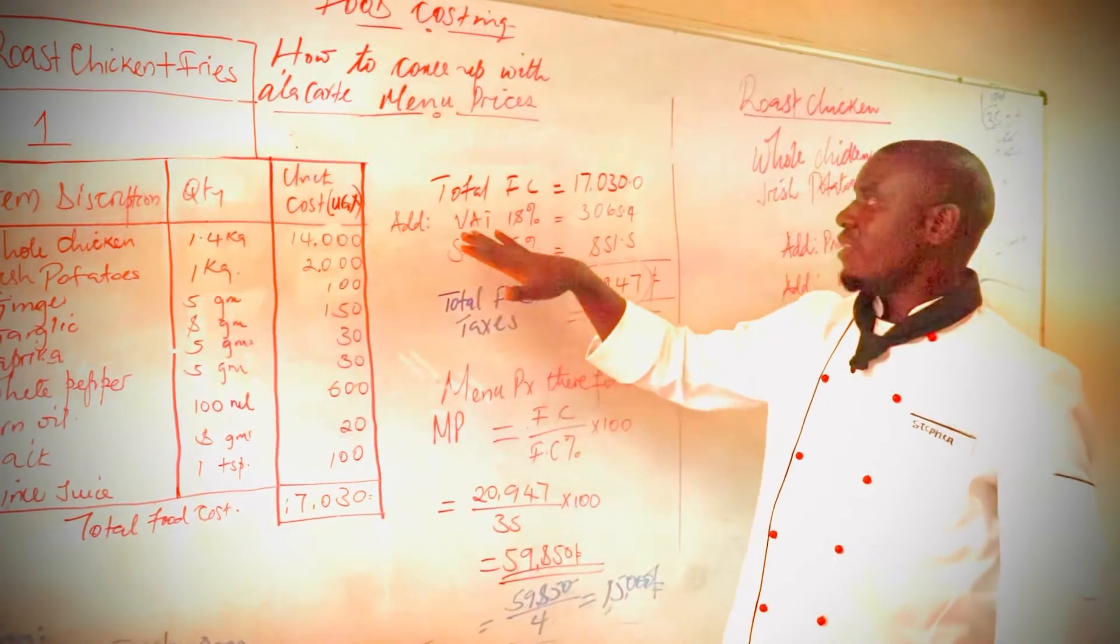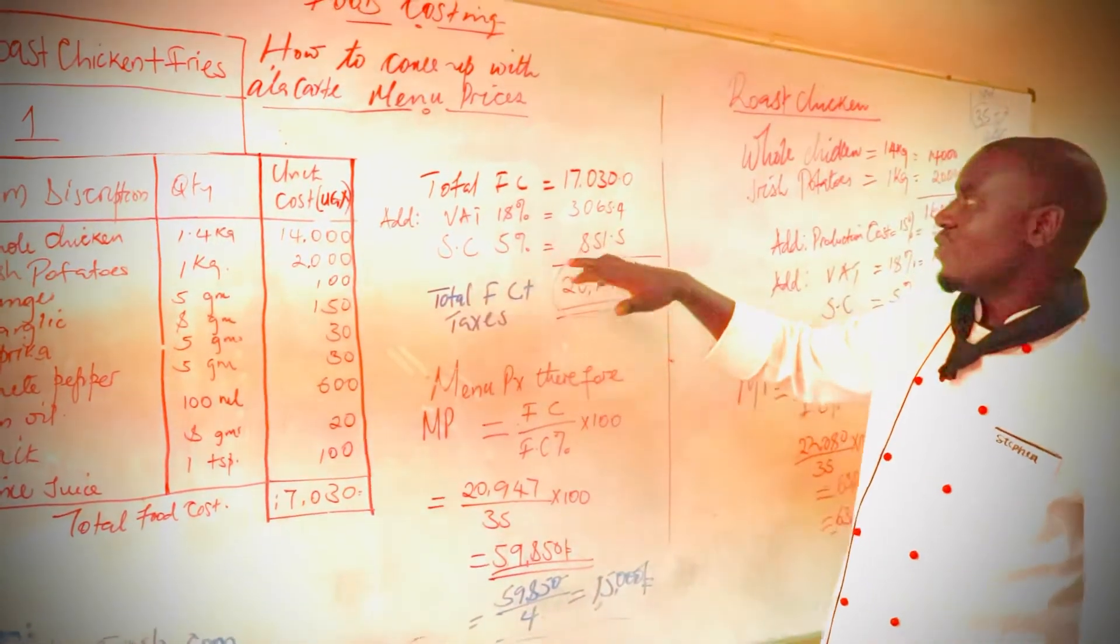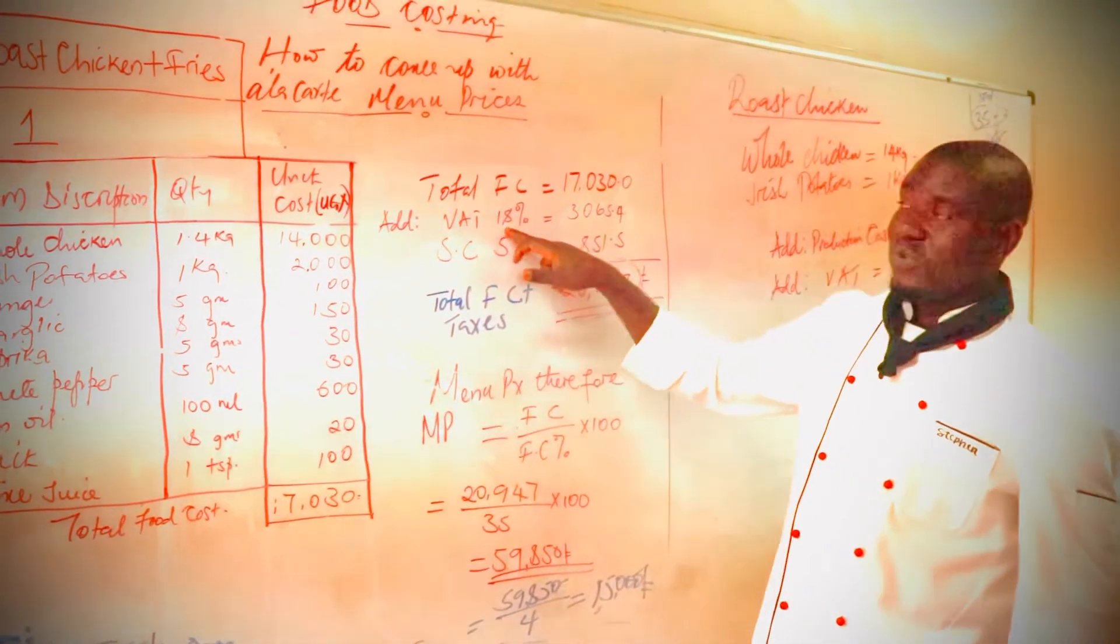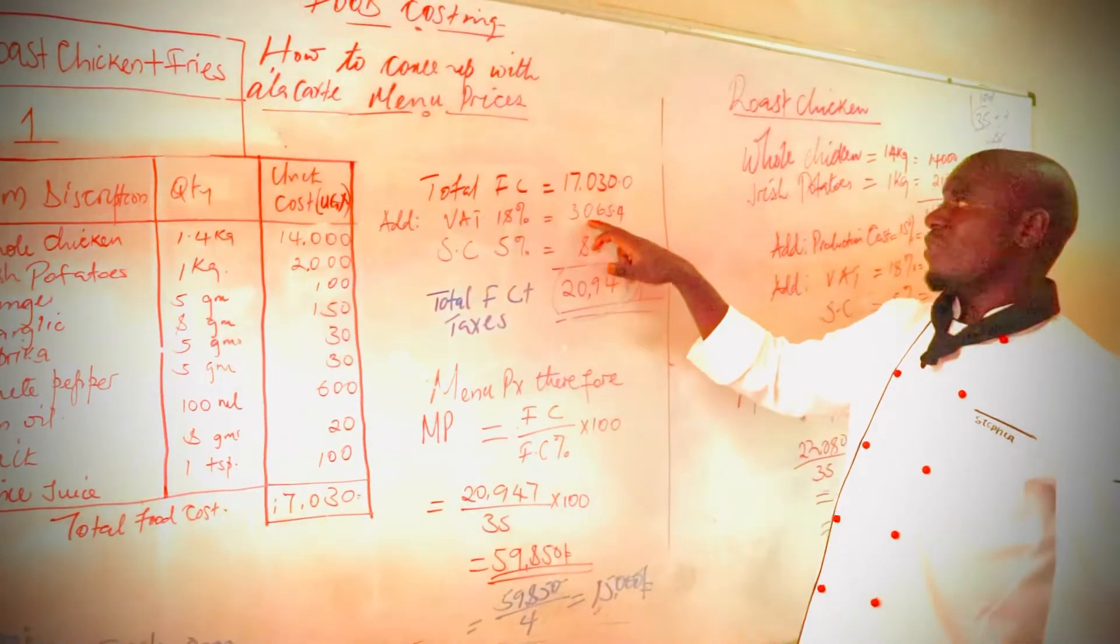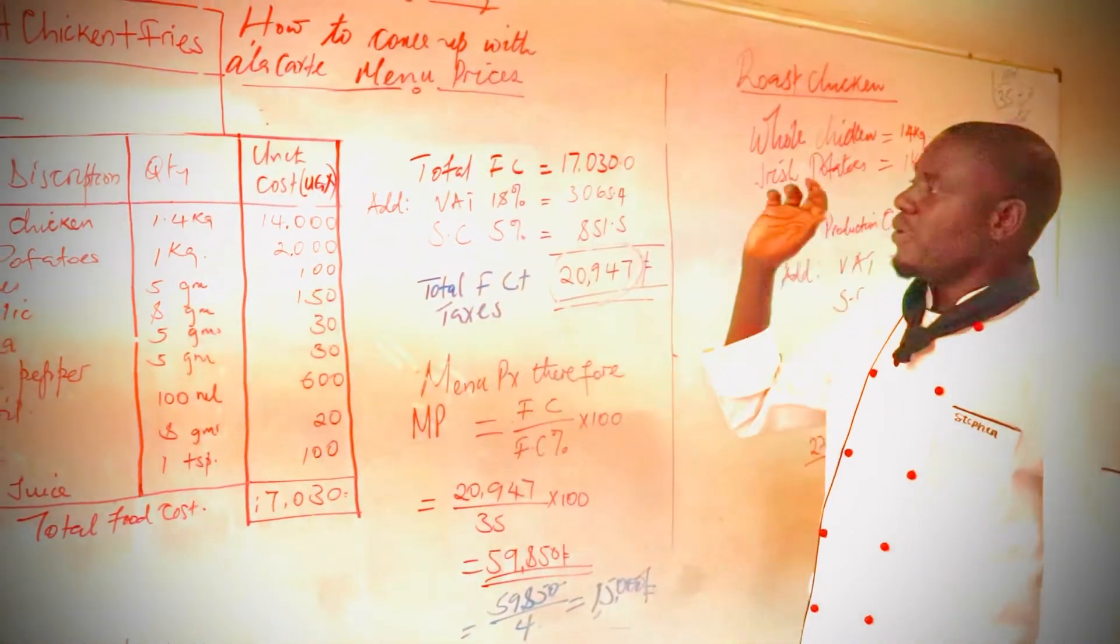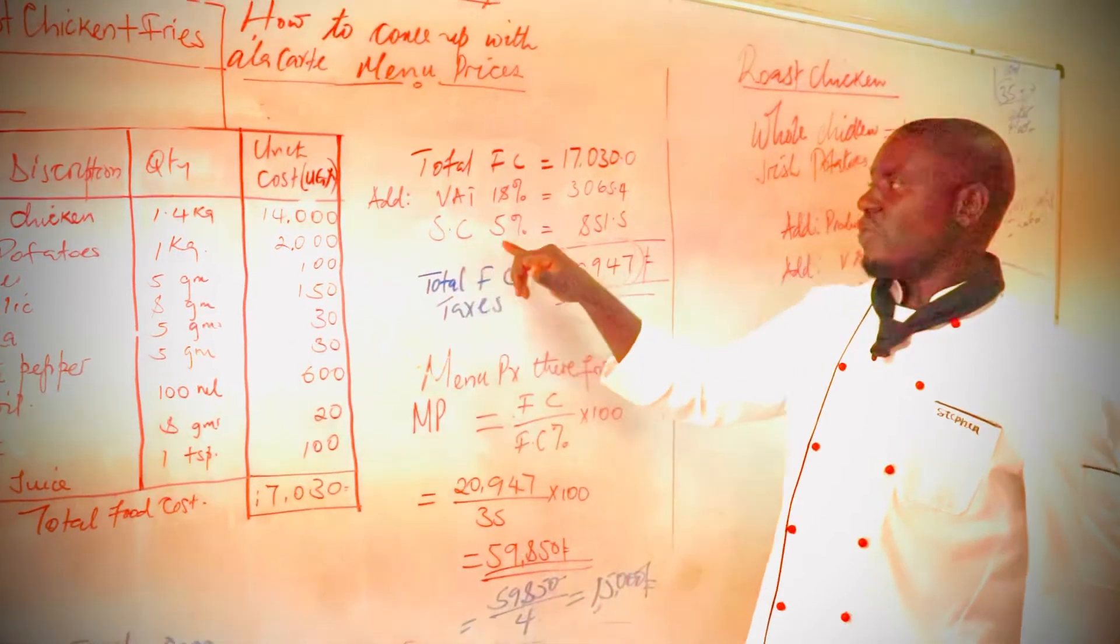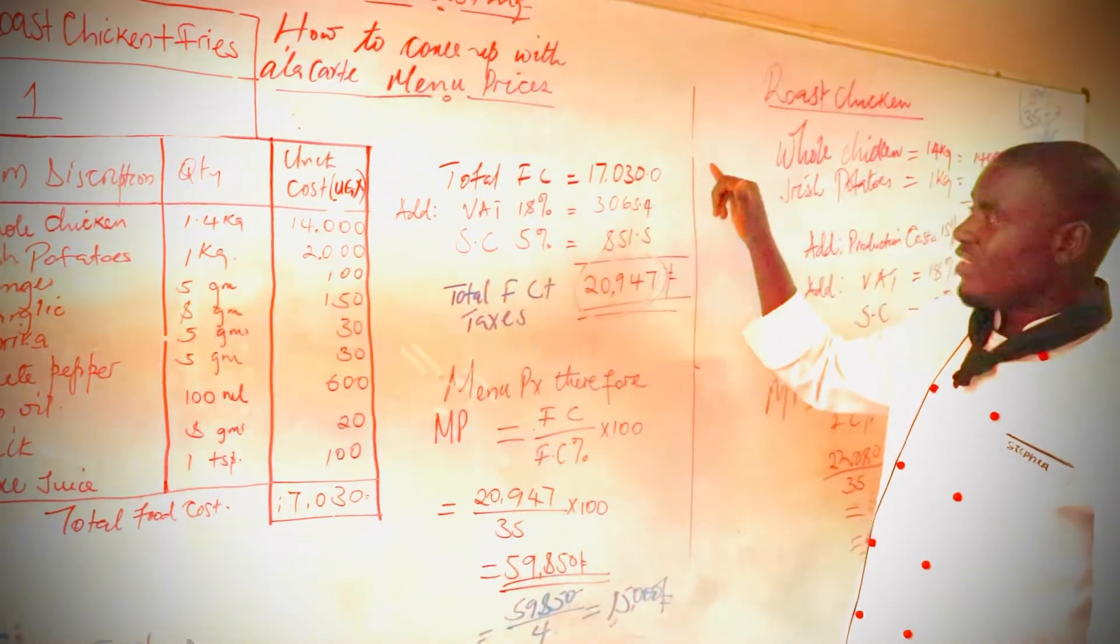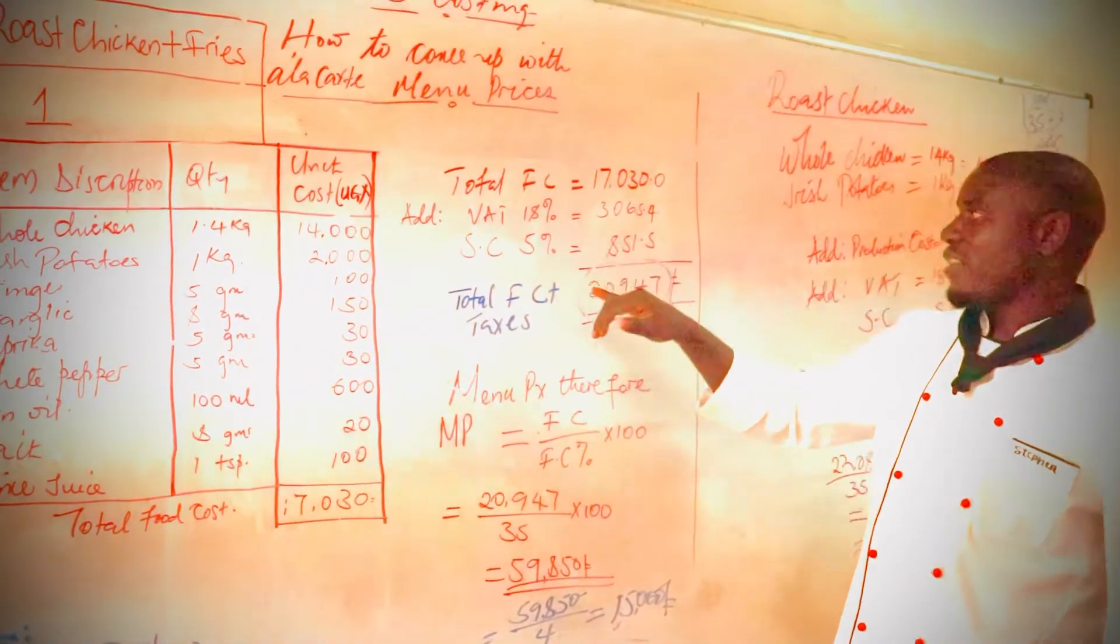We add VAT to it which is 18%, so it is 17,030 divided by 18% which is the VAT, then we also add the service charge which is 5%, so the 17,030 shillings divided by 5%.